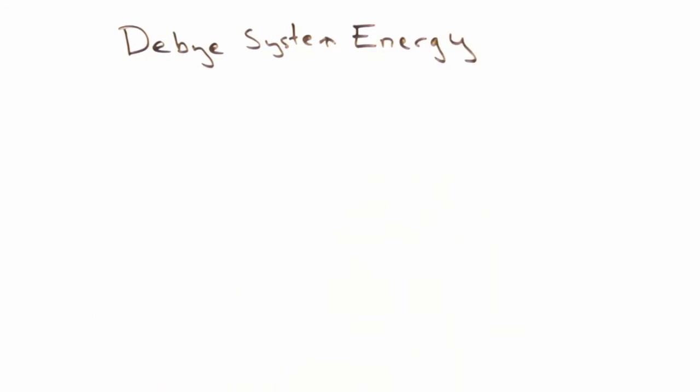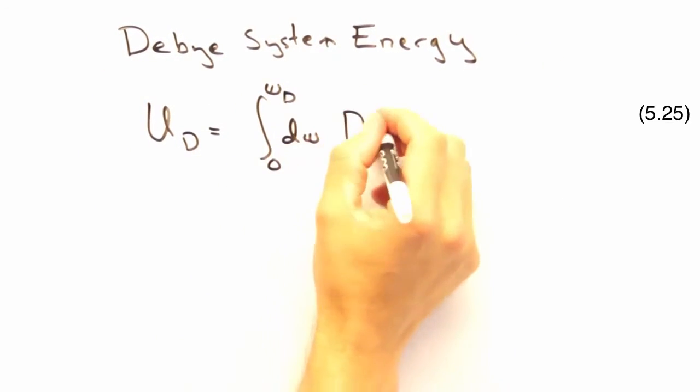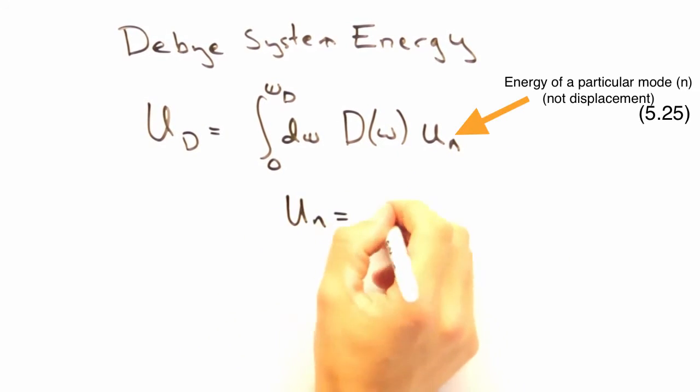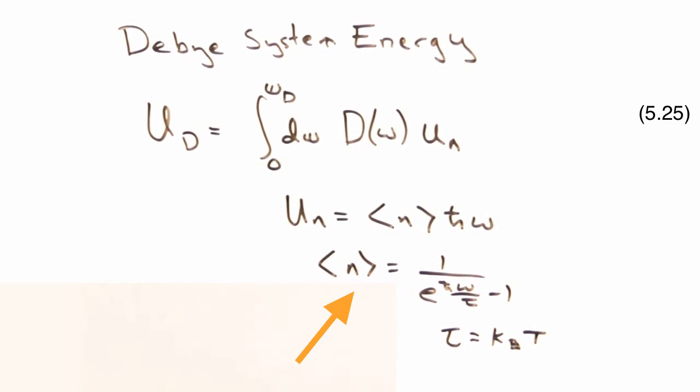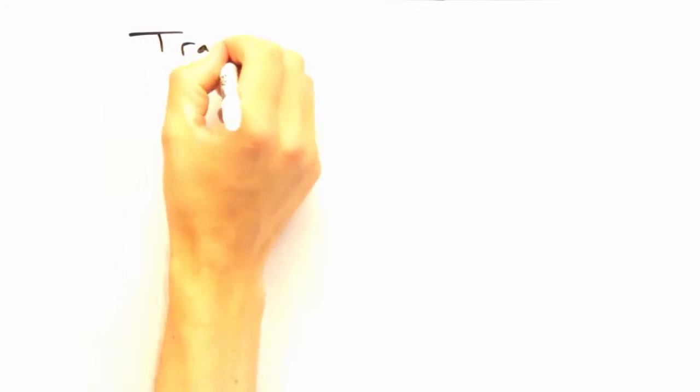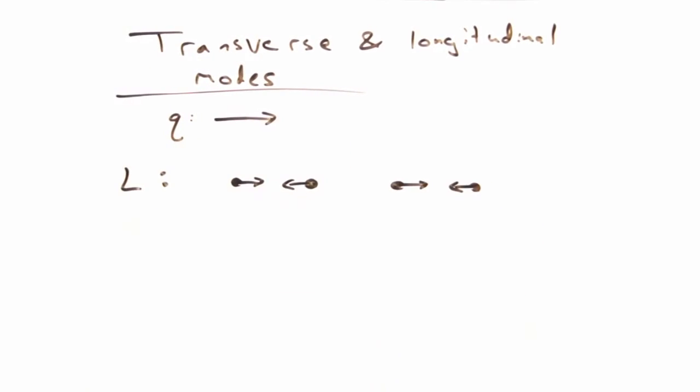Let's start by writing the energy of our system as an integral over our density of states times the energy of a particular mode, determined by h bar omega times the Planck distribution. We'll also multiply the energy by a factor of three because we have two transverse modes and one longitudinal mode for three dimensions.